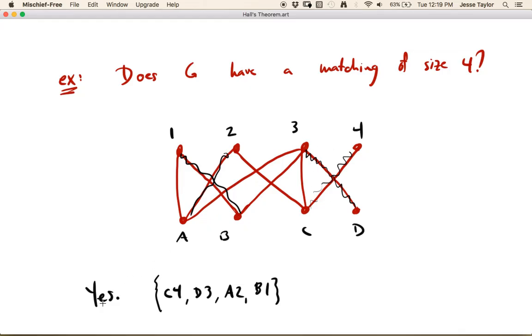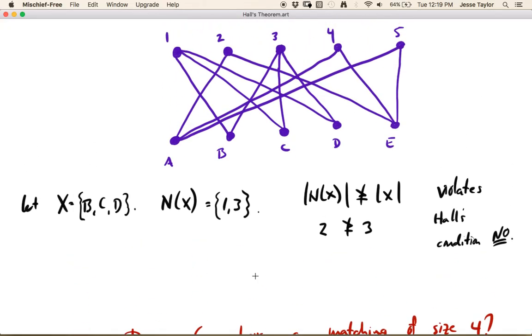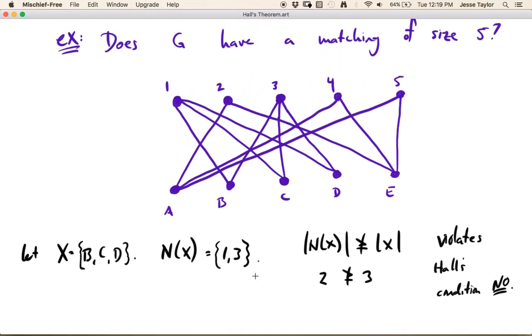So if you do have a matching, you just list it. Here's one, right? Proof by example. But if you don't have a matching, you have to provide some sort of explanation, some sort of rigorous way of explaining why not. And Hall's condition gives you a way to do that. This tells you, no, there is no way for there to be a matching here, because I can find this set that doesn't have enough neighbors to match up. So that's Hall's theorem.